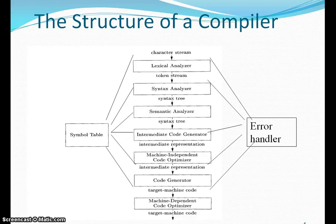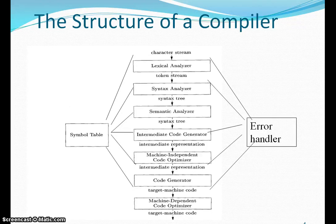During all these phases, they are all connected with two advanced data structures: the symbol table and error handler. These two data structures are connected with each and every phase of the compiler. The symbol table manages the list of all symbols available in the source code, and the error handler handles the errors which are generated in different phases of the compiler.